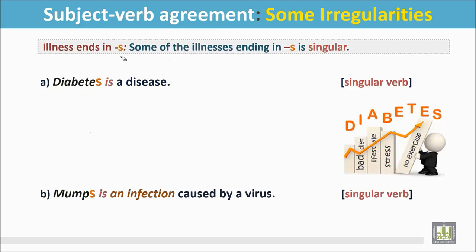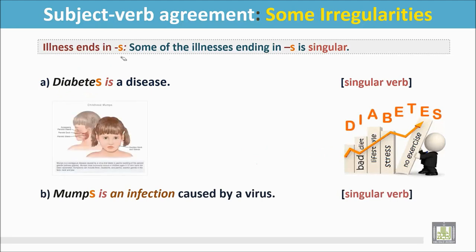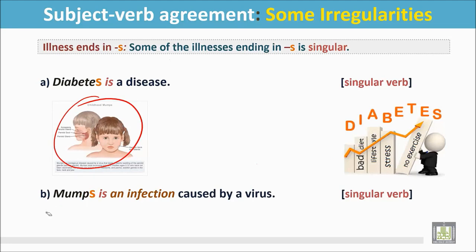Another example: Mumps is an infection caused by a virus. The name of the disease ends in S, but it is not plural. It is a singular noun, so the verb is singular.